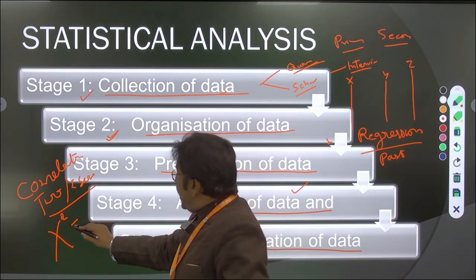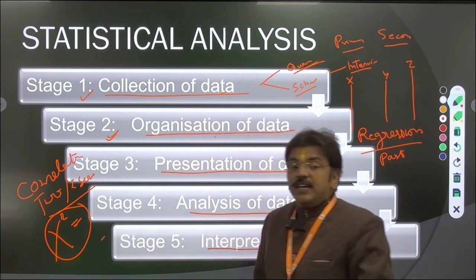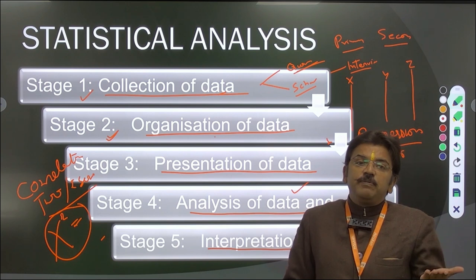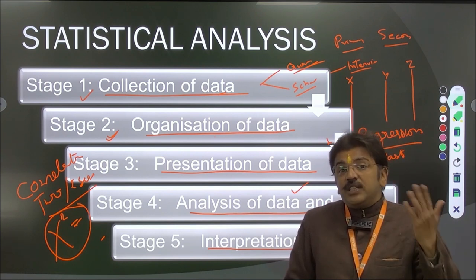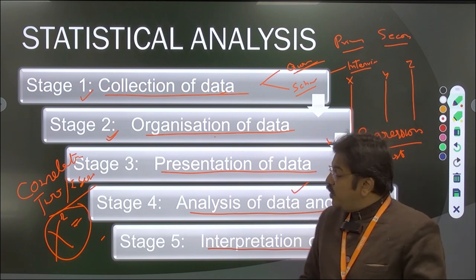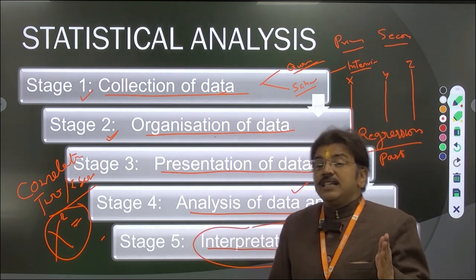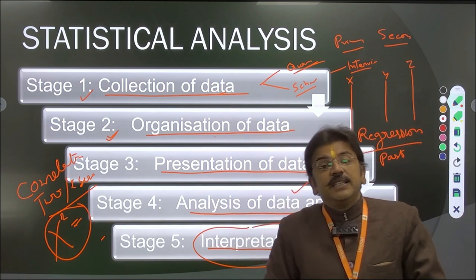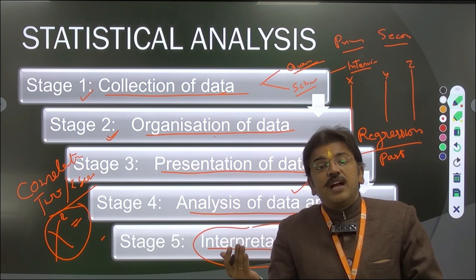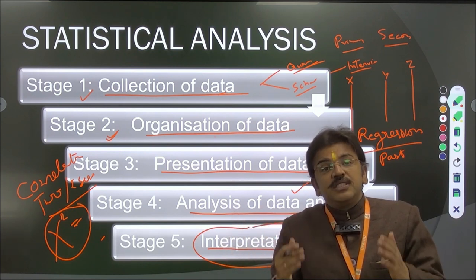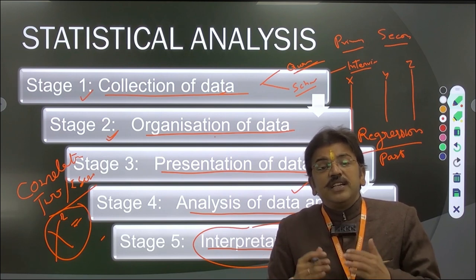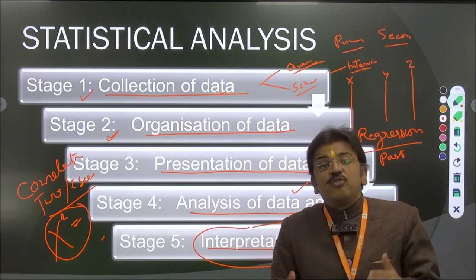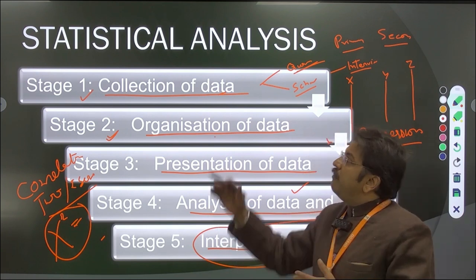The last stage is interpretation of data. For example, in a chi-square test, one is the calculated value and the other is the tabular value. When the calculated value is less than the tabular value, the hypothesis is accepted. When it is more, the hypothesis is rejected. Interpretation depends on the statistical tools used and the objectives and hypothesis you have framed.